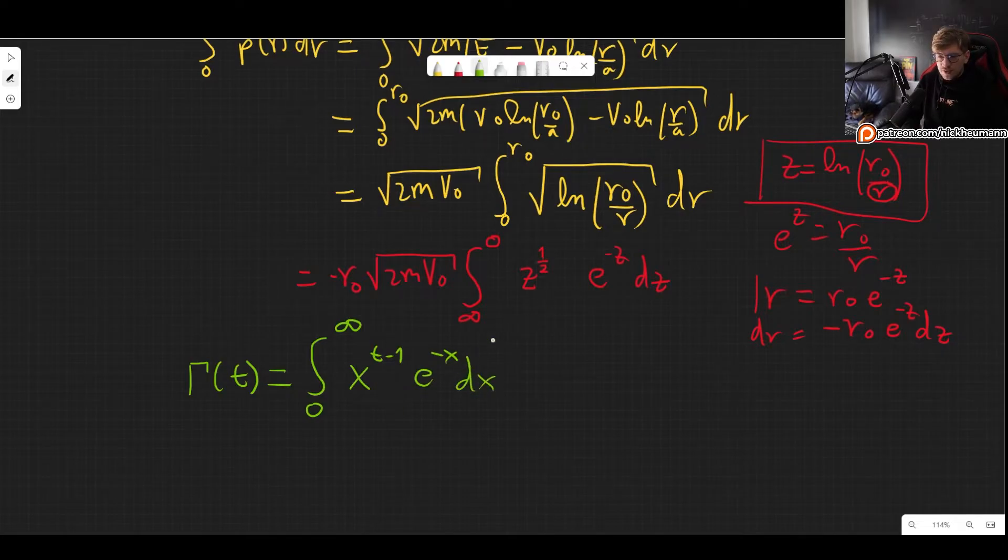And if you compare these two they look almost the same but we have to change this one half to three halves minus one, which is one half, and we can use this minus sign that is outside. We can use it to flip the end points of the integral. So instead of going from infinity to 0 now it goes from 0 to infinity.